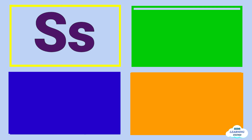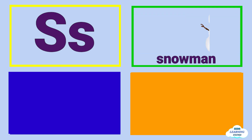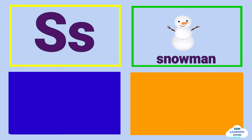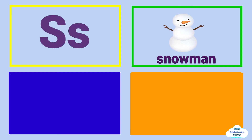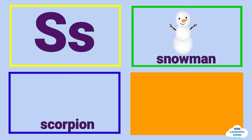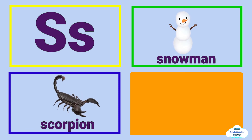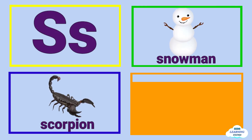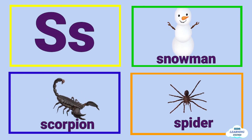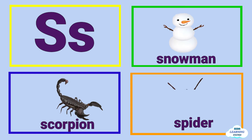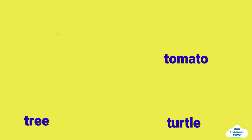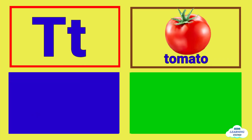S is for snowman, snowman. S is for scorpion, scorpion. S is for spider, spider.